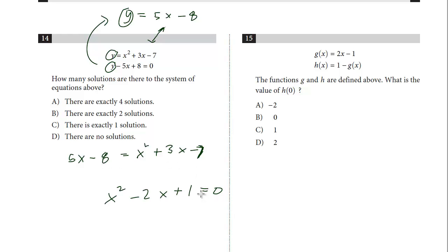Now let's look to factor to find the solutions. Well, we know the only factor of 1 is 1. We want negative 2. So we know it's x minus 1 and it's x minus 1. Or it's just x minus 1 squared.